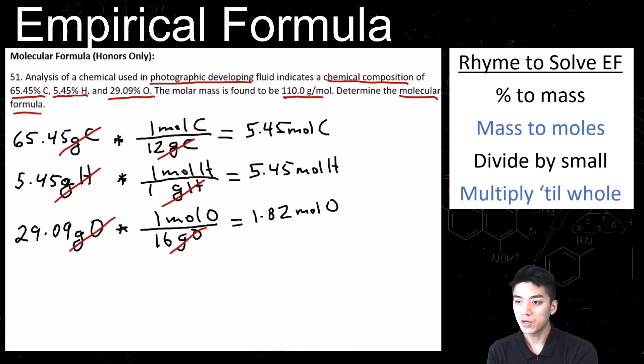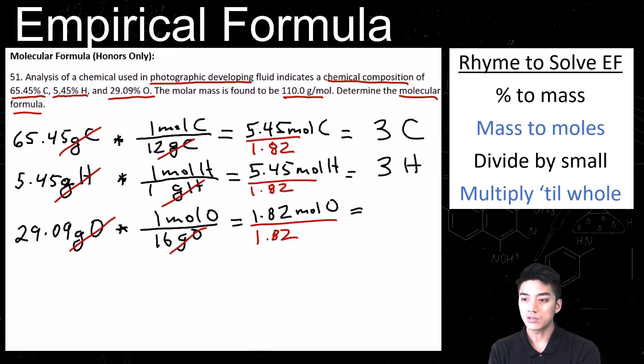The next step of the rhyme is divide by small. So the smallest number in this set is 1.82. Divide each number by 1.82. And let's see what we get. So for carbon, we're going to need 3 carbons, 3 hydrogens, and 1 oxygen. So the empirical formula is C3H3O1.